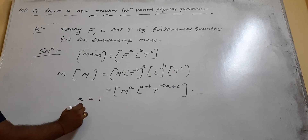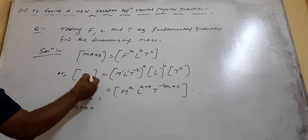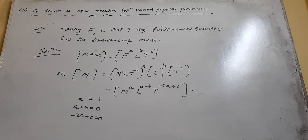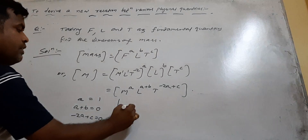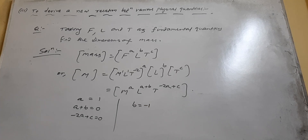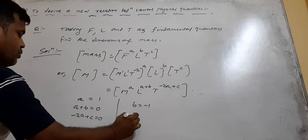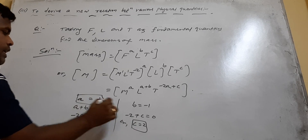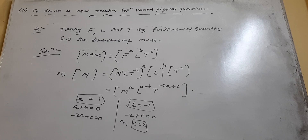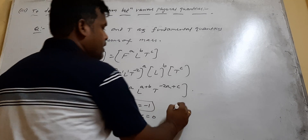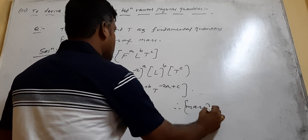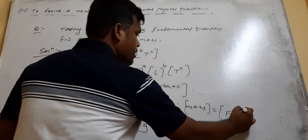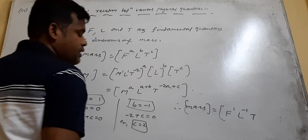Solving: A equals 1. Putting A into A plus B equals 0 gives B equals minus 1. Putting A into minus 2A plus C equals 0 gives minus 2 plus C equals 0, so C equals 2. These are the values of A, B, and C. Therefore mass equals F¹·L⁻¹·T². This is the dimensional formula of mass in terms of force, length, and time.